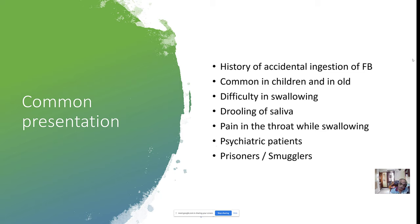Psychiatric patients won't come and complain — it will be an incidental finding unless they manifest with overt symptoms. Prisoners are notorious for hiding things in the piriform fossa. When we go for prison duty and examine the throat of a prisoner, we always compress the neck so that whatever is hidden in the piriform fossa will come out into the throat.